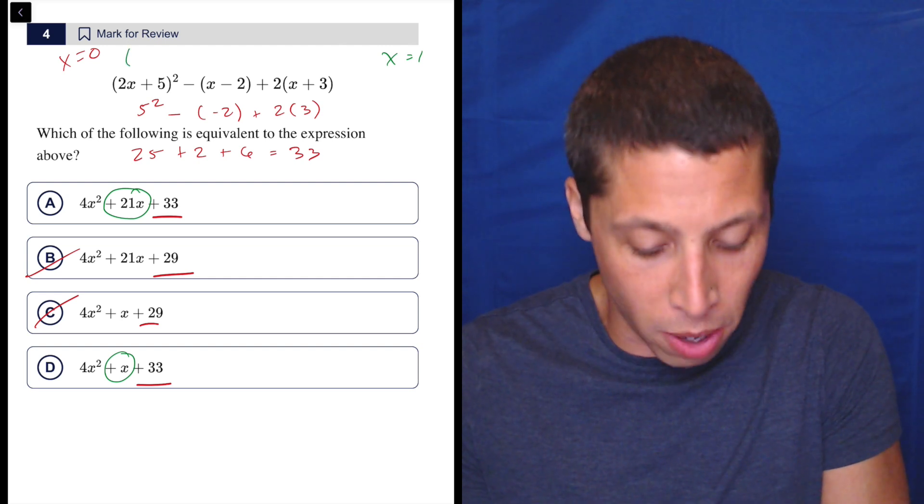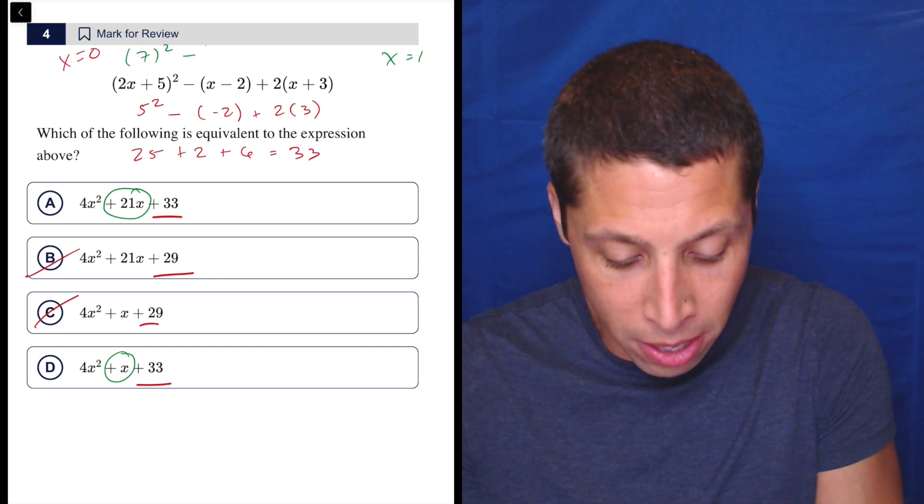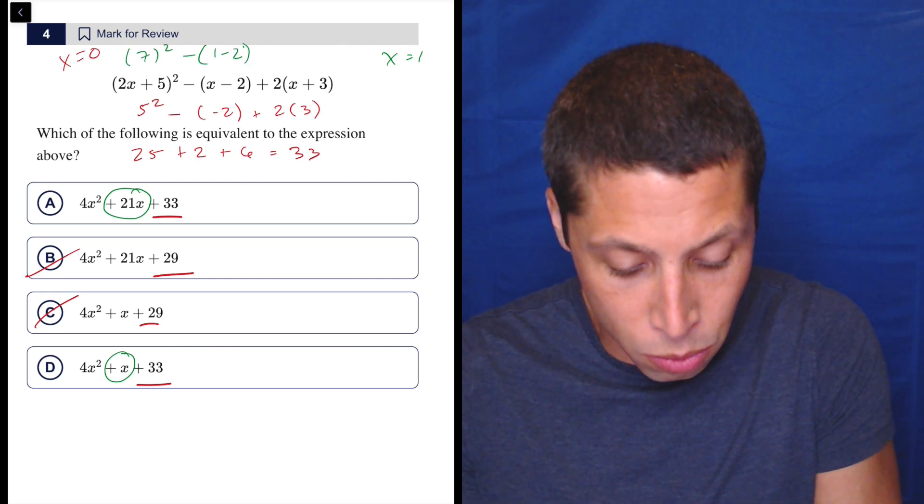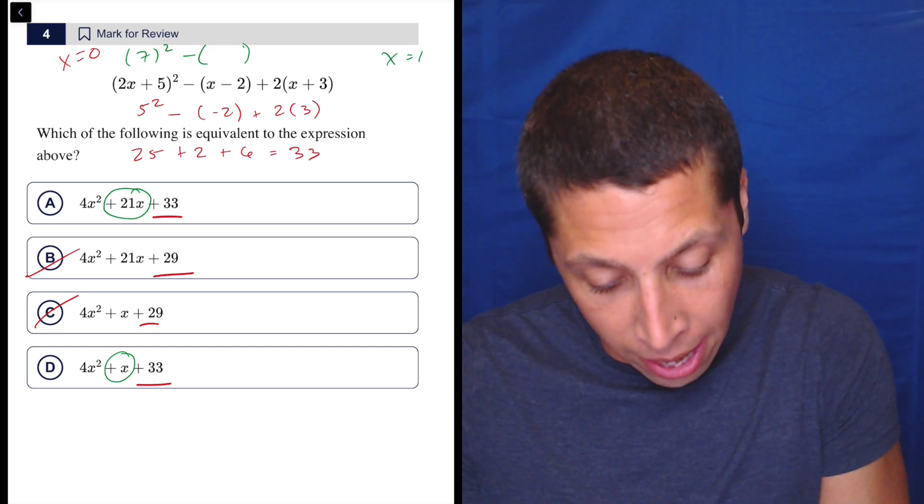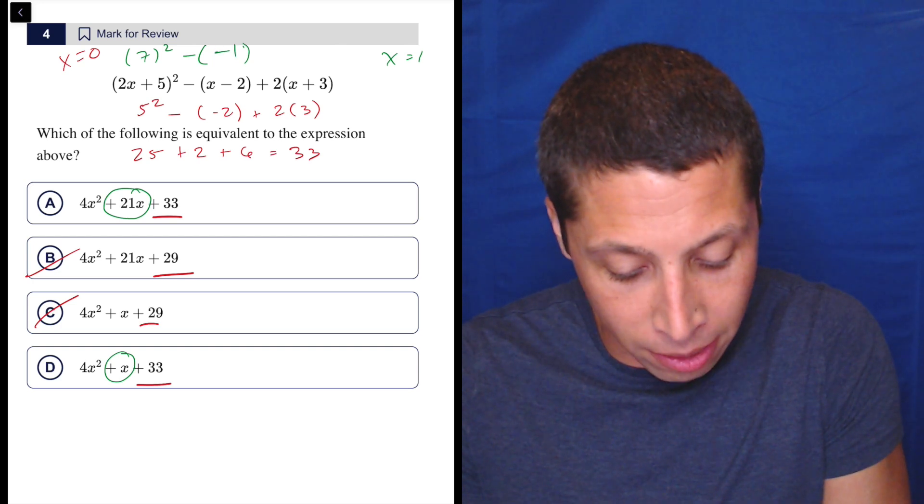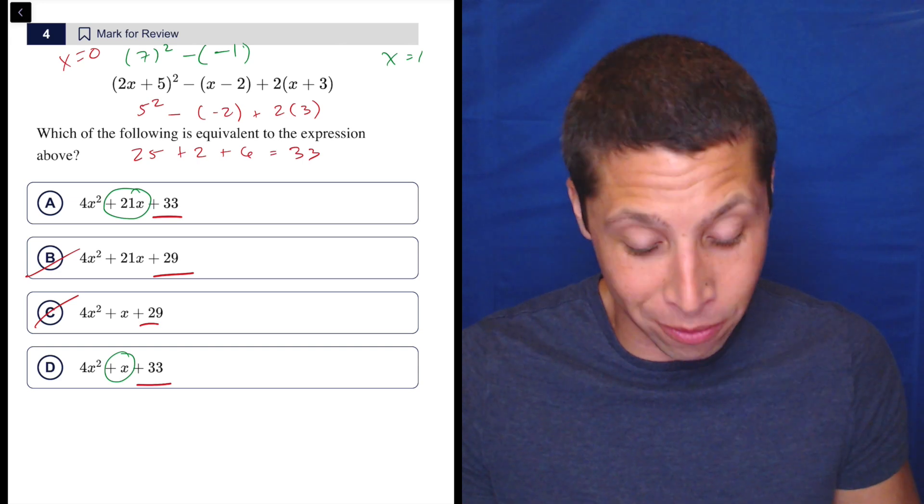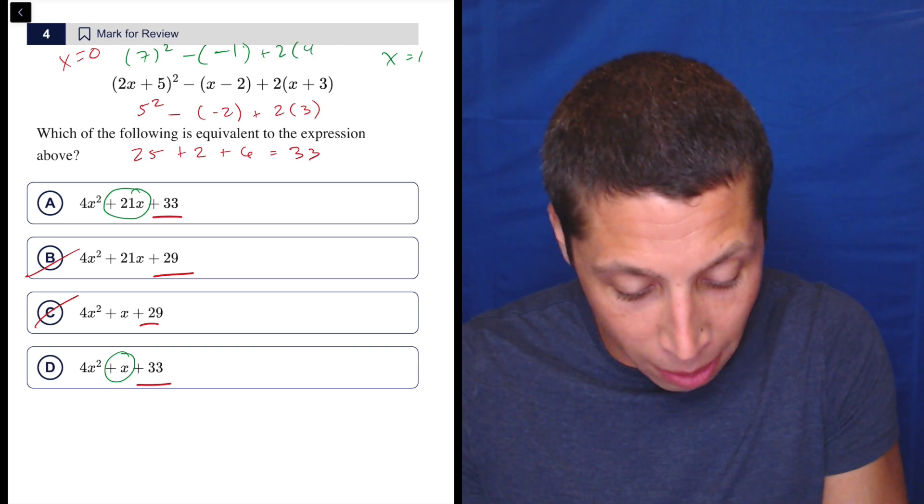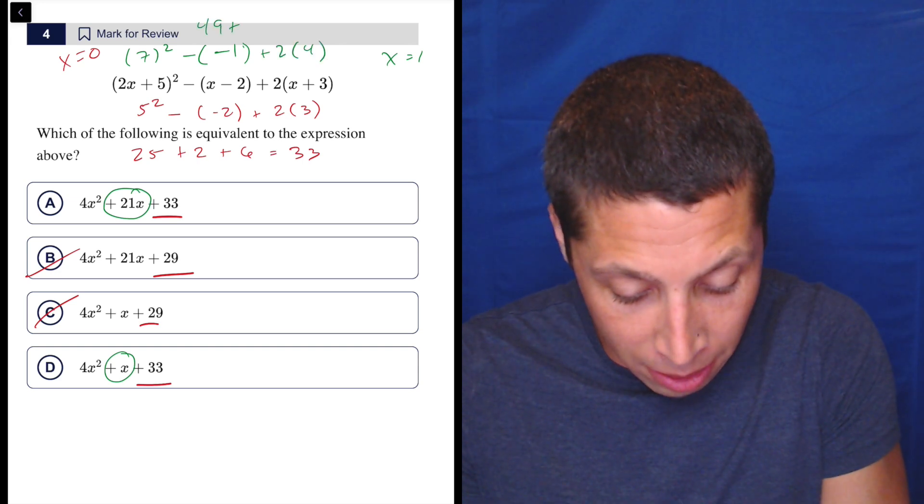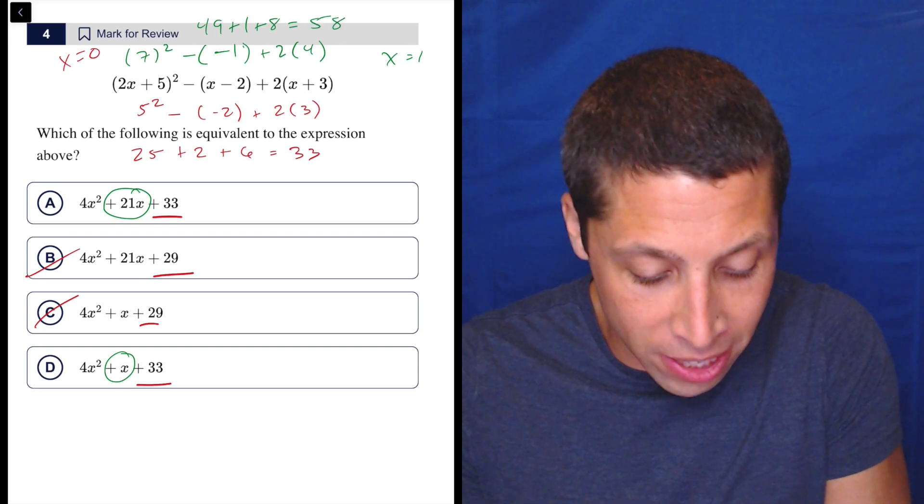This becomes two times one plus five. So that's seven squared minus one minus two. Actually, let's just get right to it. This I would do in my head. And this is probably what I'd write on my paper. So one minus two is negative one plus two times four. So that's 49 plus one plus eight. So that's 58.